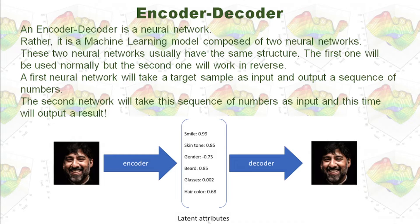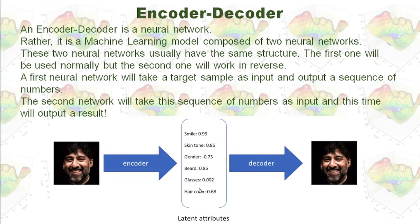You can see in the latent attributes we have smile 0.99, so it looks like this gentleman is smiling. And here we have glasses 0.002, so that means most likely this gentleman doesn't have a pair of glasses. And of course we have other features. All those features we put in our latent space.